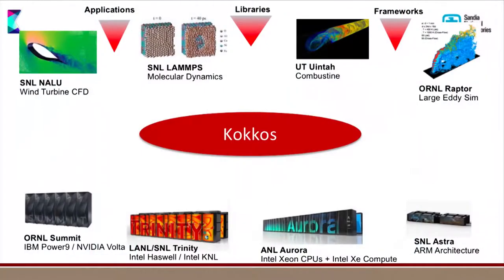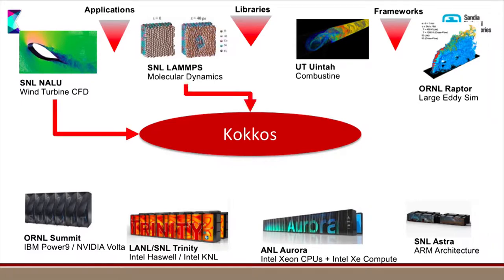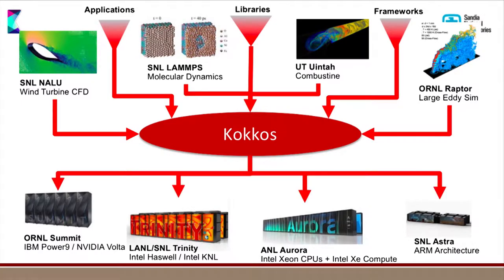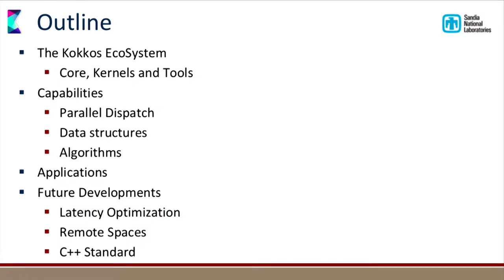The problem is you have all these applications and all these different architectures underneath. Every one of these might use a different programming model, and if you don't have something in the middle, then everybody writes to everything. What Kokkos does is transform this many-to-many problem into a many-to-one, one-to-many problem. Everybody writes to Kokkos — or in principle, OpenMP or Roger or whatever — and then we map to the stuff underneath.